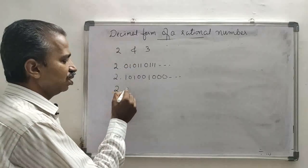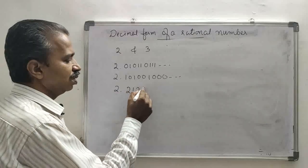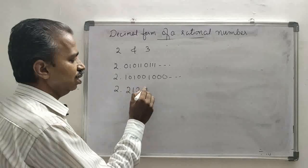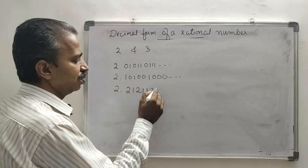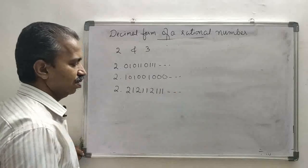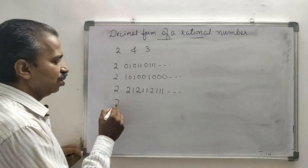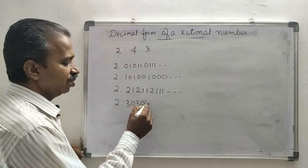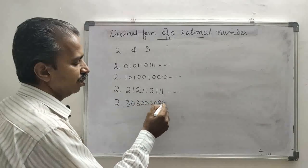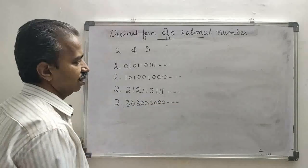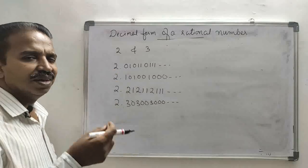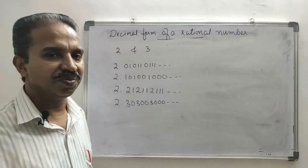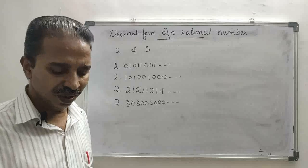Likewise, 2.2121111111111..., 2.3033003000..., and similar numbers are irrational — and like that we can write infinitely many irrational numbers between any two numbers.